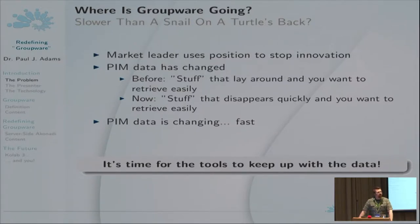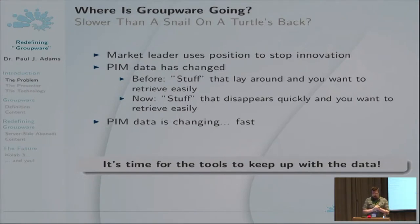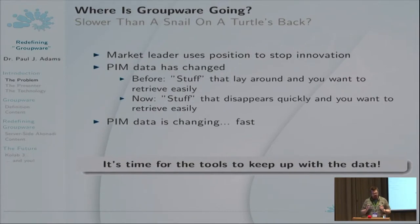PIM data is also changing fast. Maybe six years ago no one really talked about microblogging — now it's everywhere. Certainly no one was talking about Google+ or Facebook, and now they're everywhere. We've gone through a phase of geolocated data, so you can't just tweet — you also have to say where you are. The problem is that whilst the data is changing, the people who control the top end of the market — the Microsofts and Lotus Notes of this world — are not keeping up with that change. They want you to keep using the same old stuff, very focused on the enterprise market and not the everyman.